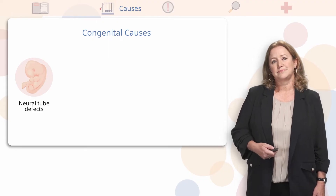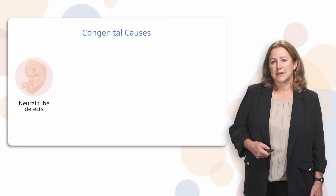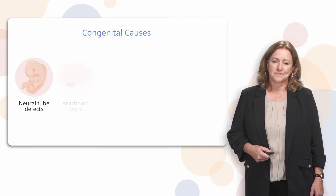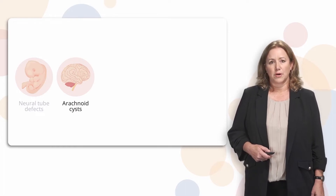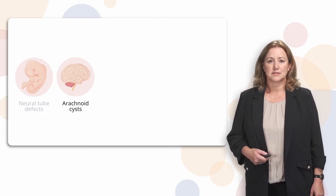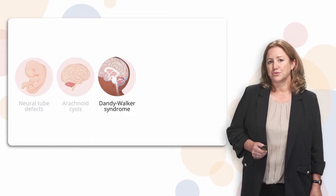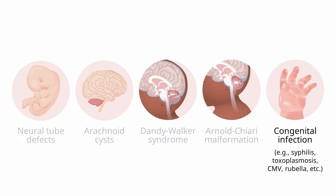Let's review some of the major causes. There are several congenital causes of hydrocephalus. One of the first ones is neural tube defects — the neural tube is basically the early brain and spinal cord during fetal development, and when there's a defect in it, it can lead to hydrocephalus. Arachnoid cysts are cysts or fluid-filled sacs that grow on the brain and/or spinal cord, and that can also happen during fetal development. Dandy-Walker syndrome is a congenital brain malformation that affects the cerebellum and the ventricle near it. Arnold-Chiari malformations are a group of deformities of the posterior fossa and the hindbrain, which is where most of the cranial nerves are found.